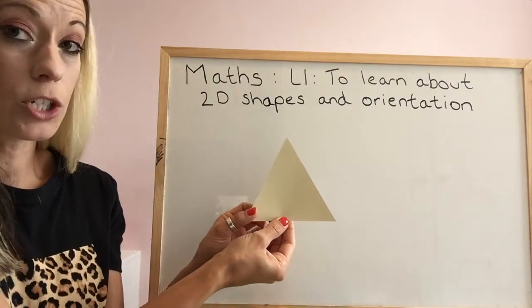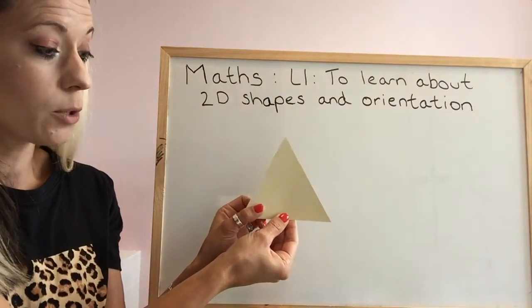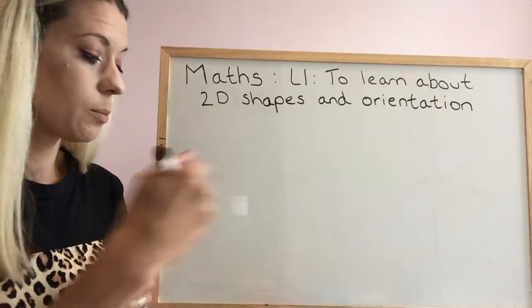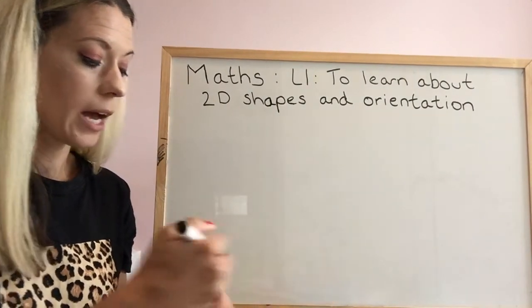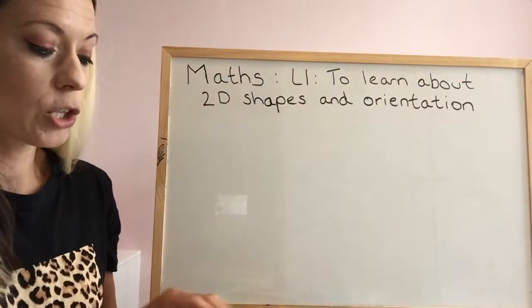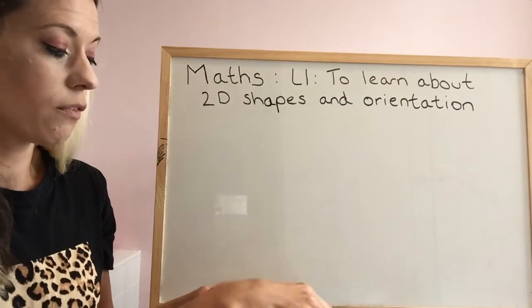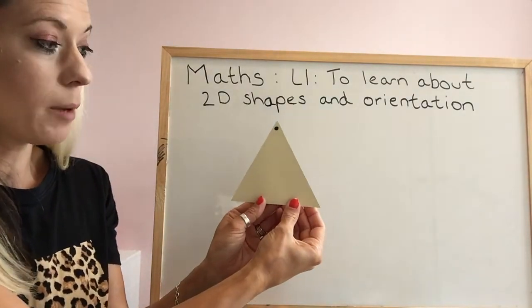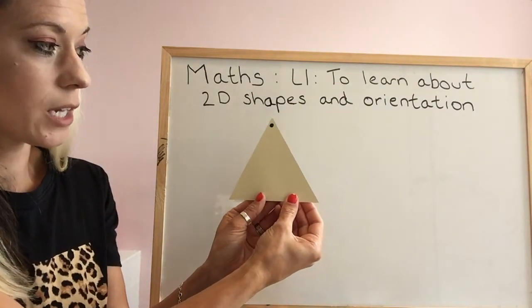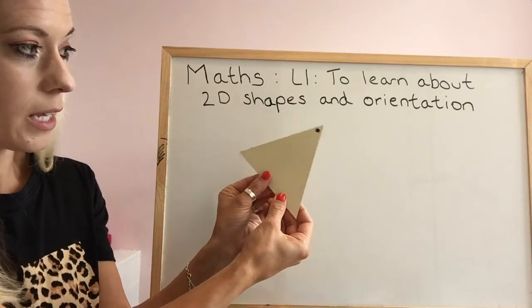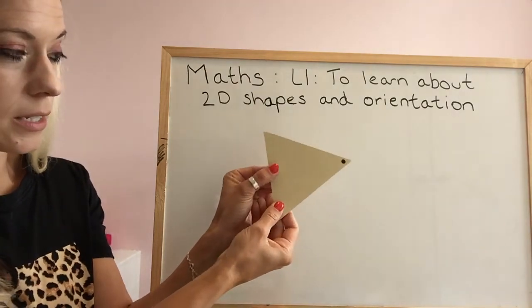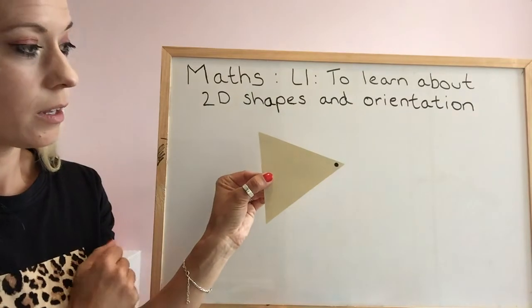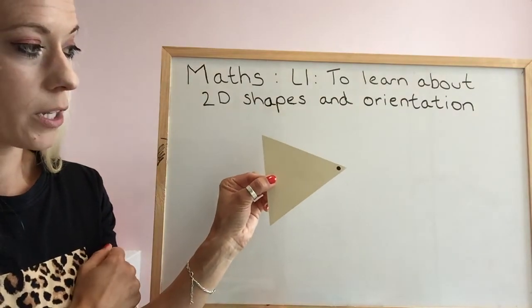Now I'm going to show you a quarter turn, but this time I'm going to put a little mark at the top of my triangle so you might be able to see it. A quarter turn is this — I have turned it a quarter in a clockwise way.